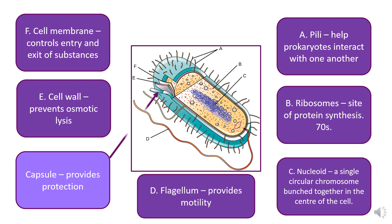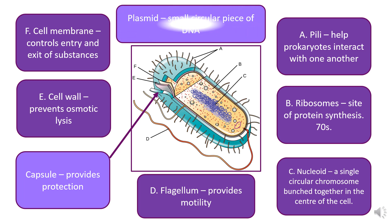Something not labelled on the diagram but visible is the capsule — the blue layer around the outside. It is the outermost layer of the prokaryote and provides protection. A simple analogy: the capsule is like covering the entire prokaryote in vaseline, making it more difficult for the immune system to catch and kill it.